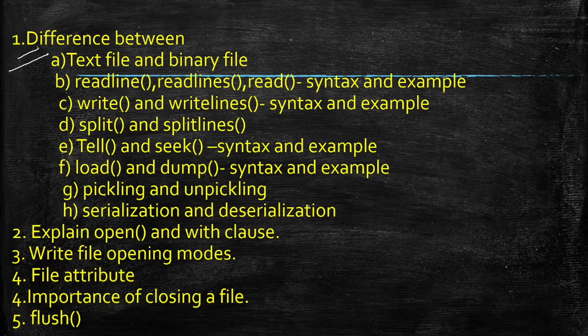For the difference between text file and binary file in a 2-mark question, mention these keywords: for a text file, data is stored in ASCII or Unicode characters; in a binary file, data is stored as raw data. In a text file, it is human-readable; binary file is not human-readable. For examples, text file: Notepad, WordPad; binary file: images, videos, etc.